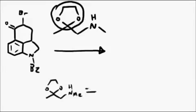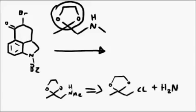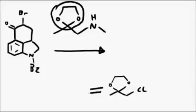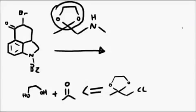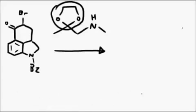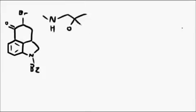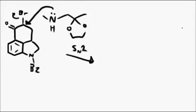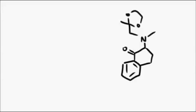As for how that fragment was made: methylamine reacted with a chloro compound in one step, and the chloro compound in turn came from acetone, glycol, and chlorine under acidic conditions to get mono addition. A net SN2 displacement of bromide by nitrogen imports all that extra fragment.